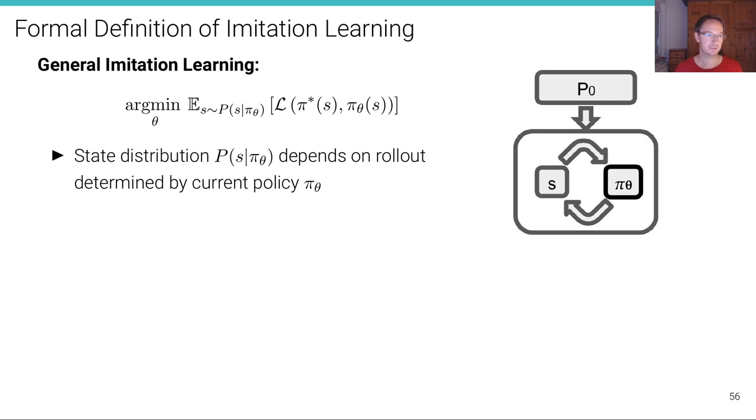Using these definitions, we are now ready to define formally imitation learning. And we start with the most general setting, the general imitation learning setting. The general imitation learning setting is illustrated here on the right. And the mathematical description, the mathematical formulation is shown here. What we want to do in general imitation learning is to find the parameters θ by minimizing this expression here with respect to the parameters θ. What is this expression? This expression is the expectation.